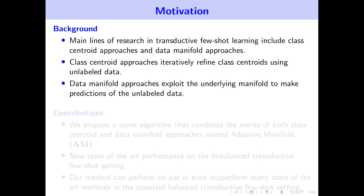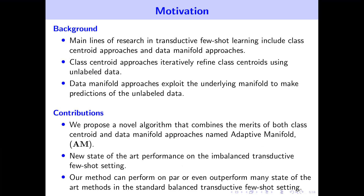The main lines of research in transductive few-shot learning include class-centric approaches and data-manifold approaches. Class-centric approaches iteratively refine class prototypes using unlabeled data. Data-manifold approaches exploit the underlying manifold to make predictions for the unlabeled data. Our contributions include a novel algorithm that combines the merits of both approaches named Adaptive Manifold. We achieve a new state-of-the-art performance in imbalanced transductive few-shot learning, and our method can perform on par or even outperform many state-of-the-art methods in the standard balanced setting.